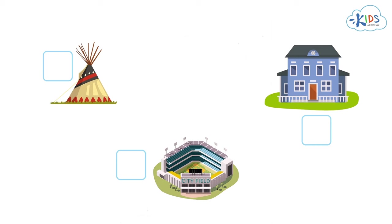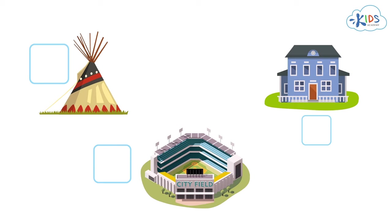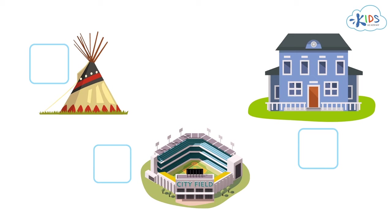Let's look at the last few pictures. There is a teepee, a sports stadium, and a cottage. Which of these is not a home? A sports stadium is not a home, but people do live in teepees and cottages. Great choice!